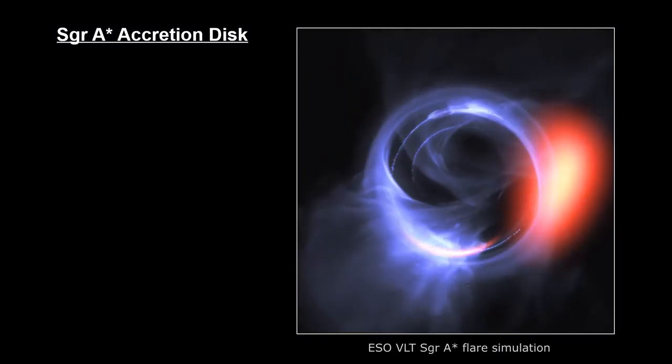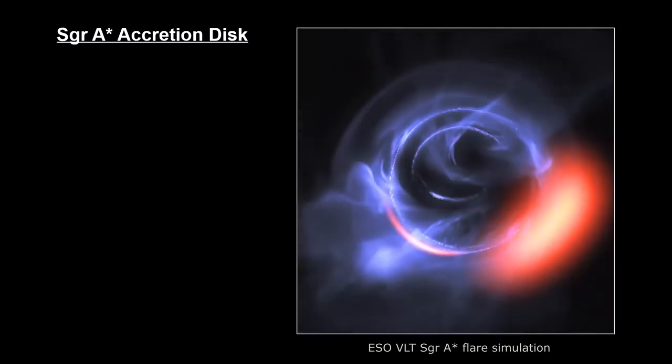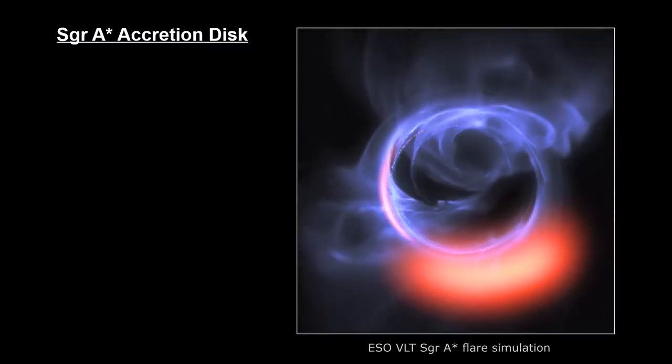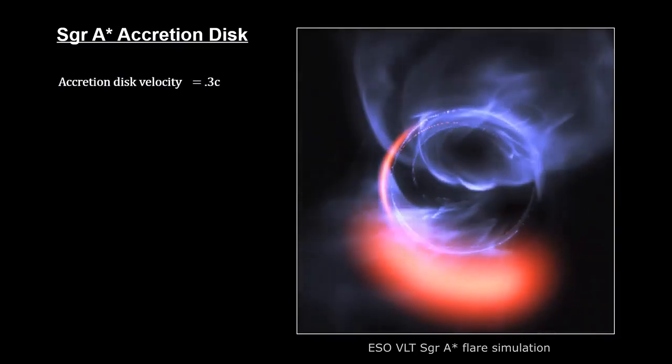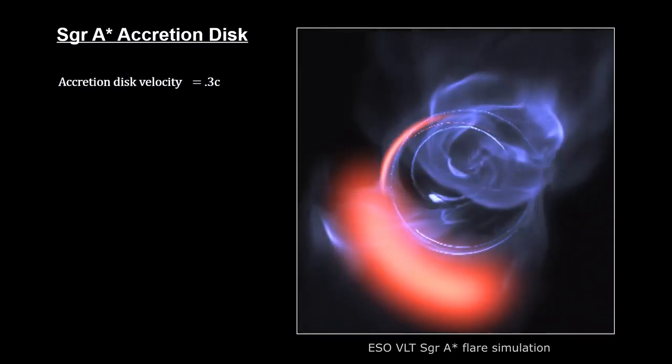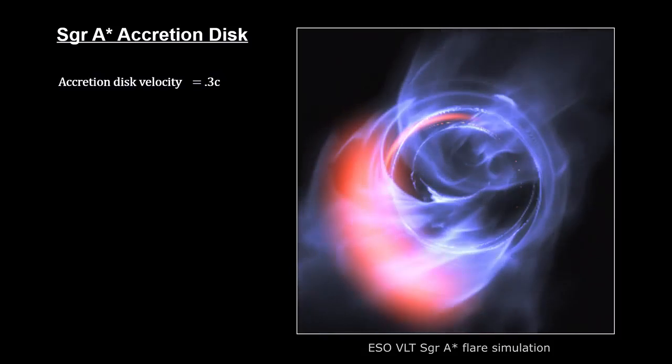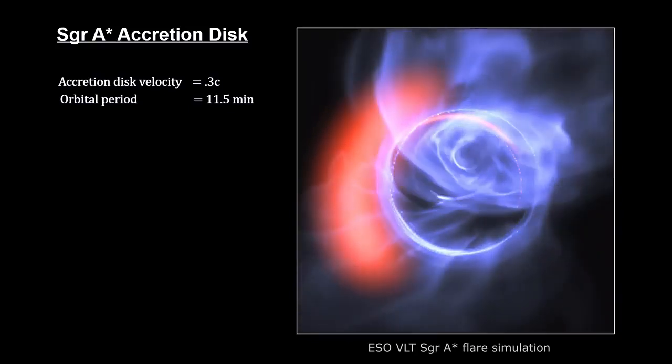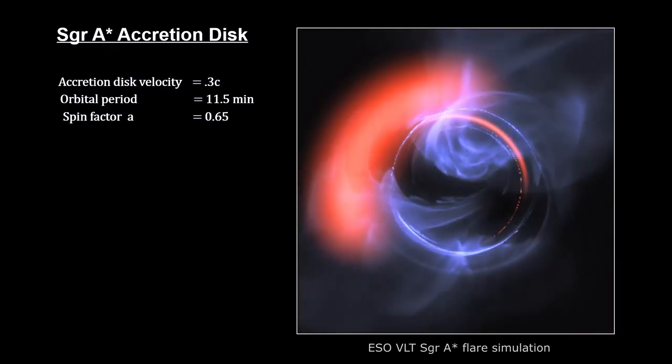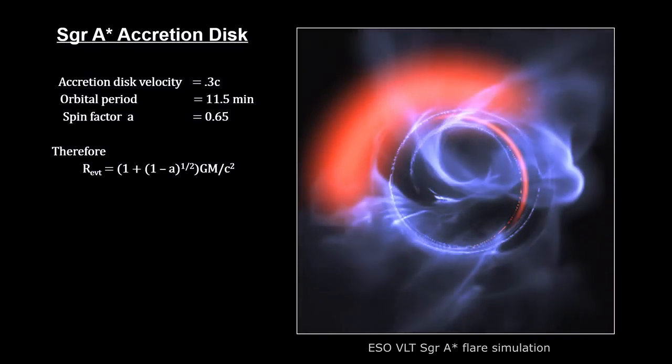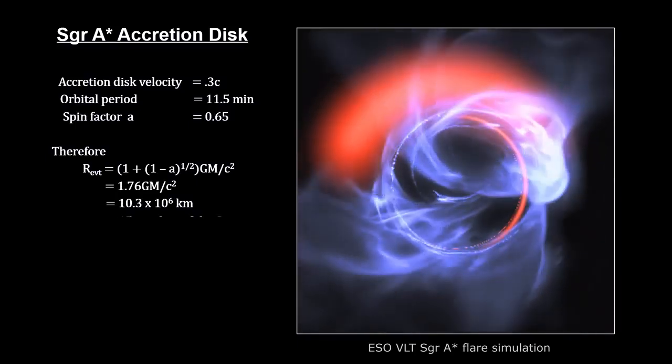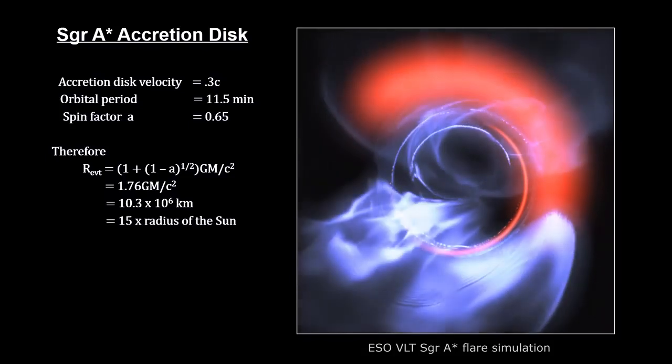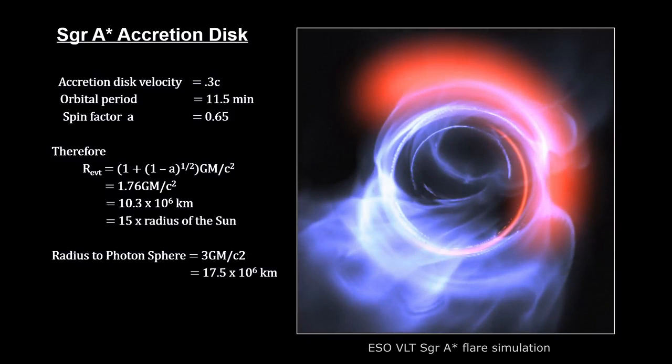In late 2018, ESO's GRAVITY instrument observed flares of infrared radiation coming from the accretion disk around Sag A-star. These flares came from clumps of gas swirling around at about 30% of the speed of light on a circular orbit just outside the event horizon. They indicate that Sag A-star is spinning with a full rotation every 11 and a half minutes. This makes the 4 million solar mass Sag A-star a supermassive Kerr black hole. This new information also enabled calculating the distance from Sag A-star's center to its event horizon at around 10 million kilometers, or 15 times the radius of our sun, and the distance to the photon sphere at around 17 million kilometers.